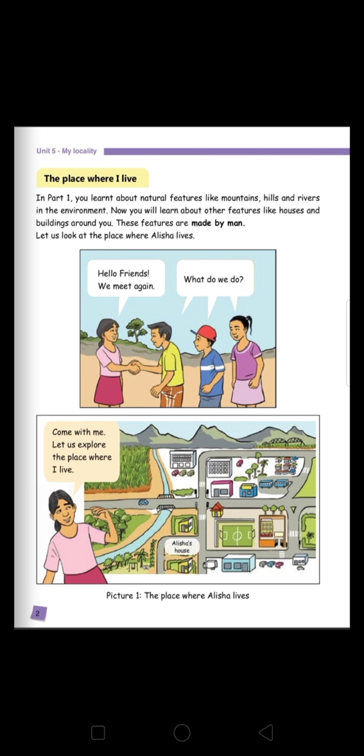Let us look at the place where Alisha lives. Come with me, let us explore the place where I live. What can you see in Alisha's locality? We can see mountains, sugarcane fields, forests, the road, the bridge. We can see houses, buildings, buses and so many things.